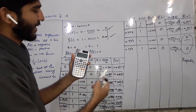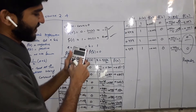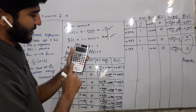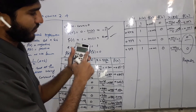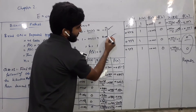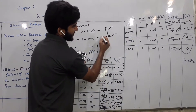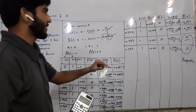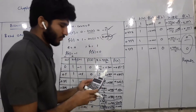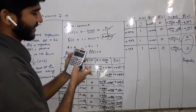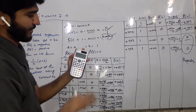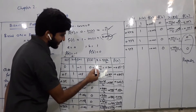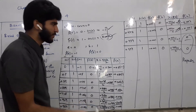اگر آپ اس کو زیادہ numbers پہ fix کریں — let's suppose 5 numbers پہ — تو یہ 0.00001 آئے گا، جو ایک positive number ہے. پر ہمیں 3 decimal places پر لینا ہے تو 0.000 آرہا ہے. ہم 3 decimal places پہ fix رکھتے ہیں. تو f(b) = 0.000 لکھ سکتے ہیں یا صرف 0 لکھ دیں — آپ کی مرضی ہے.